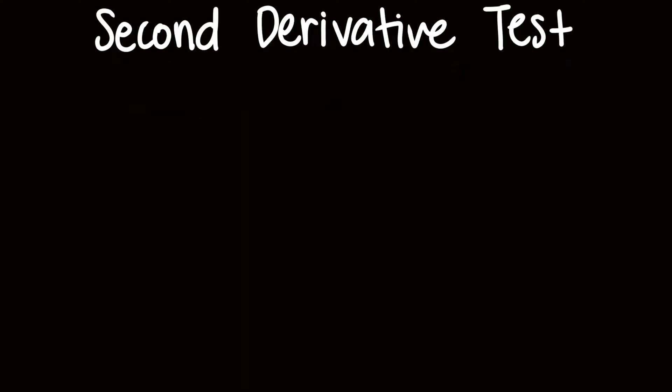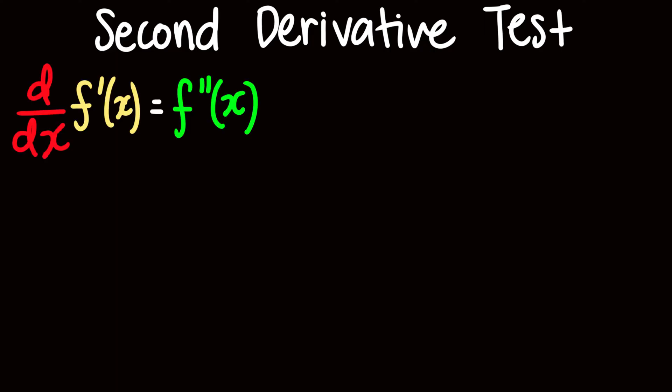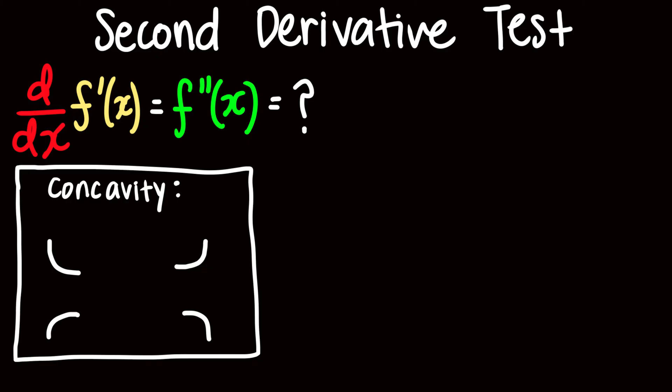So now let's talk about the second derivative test. The second derivative test is what it sounds like — it uses the second derivative. But what does it determine? First, we need to understand what the second derivative gives us: it gives us the concavity of a function. You can think of concavity as the rate of change of the first derivative, since it's taking the derivative of the first derivative. So it's the same concept as the first derivative test, but with different reliances.